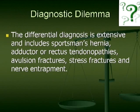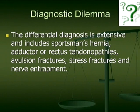Osteitis pubis can sometimes create a diagnostic dilemma. The differential diagnosis can be quite extensive and includes sportsman's hernia, which is a rupture of the posterior wall of the inguinal canal, adductor and rectus tendinopathies. You can also have avulsion fractures, stress fractures, labral tears, and osteonecrosis of the femoral head.